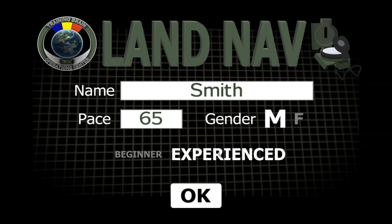The beginner course always uses the same points, 300 to 400 meters from each other in relatively open terrain. These points are also green instead of orange.